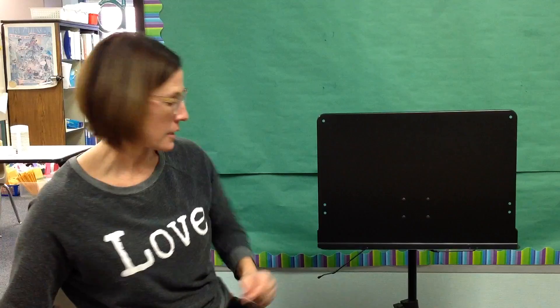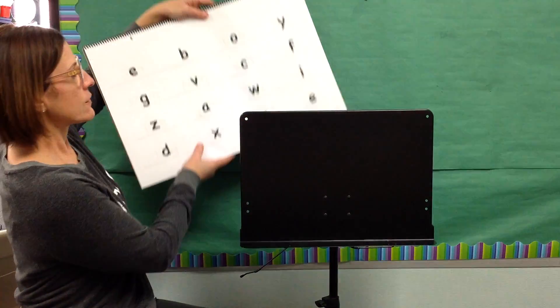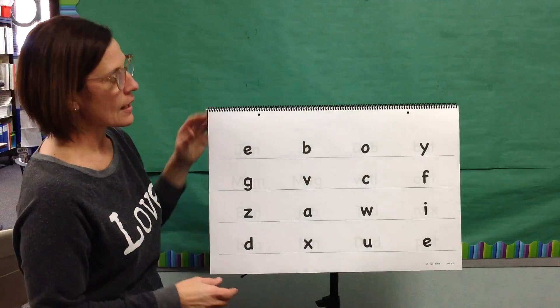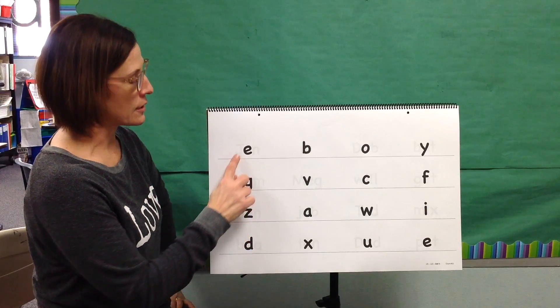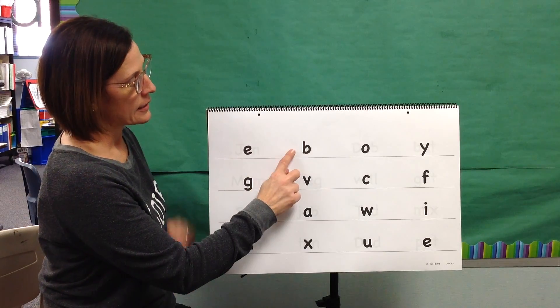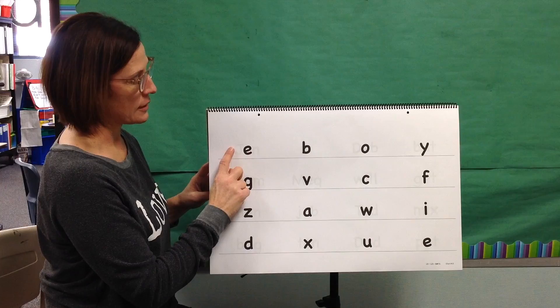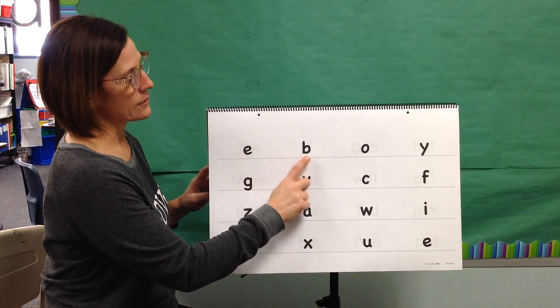Next we will say the sound for each letter. I will model the first two. My turn. Sound: Eh. Sound: B. Your turn. Sound: Eh. Sound: B.